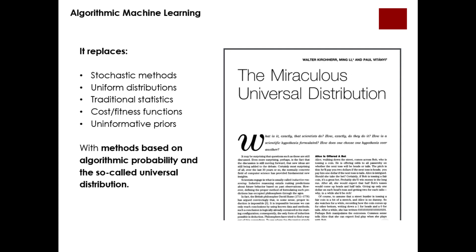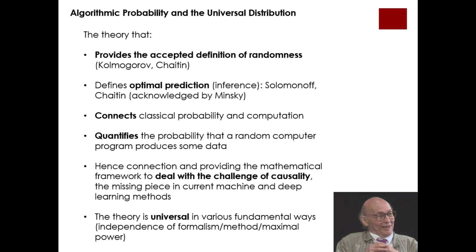The main idea behind these contributions is the replacement of methods and functions currently based on traditional statistics with methods rooted in algorithmic probability and based on approximations to the universal distribution. As we have seen before, algorithmic probability provides the accepted definition of randomness, just as its equivalent formulation of algorithmic complexity. Algorithmic probability also defines optimal prediction or optimal inference, and connects or advances classical probability with the use of modern computation by introducing the idea of computability. The main idea is to quantify the probability that a random computer program produces a piece of data, and we have seen how all this goes into the major challenge in science of causality and finding causes for effects in all areas of science.